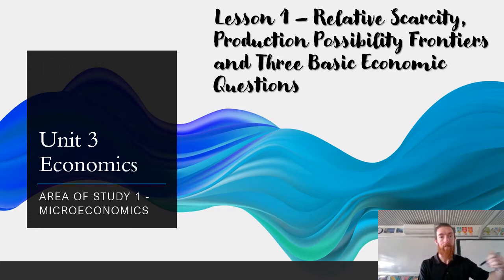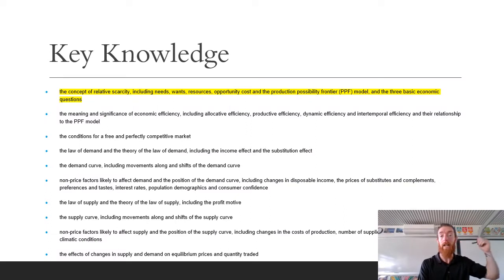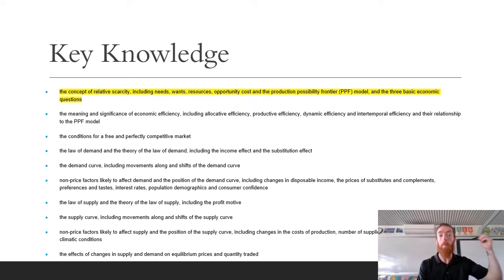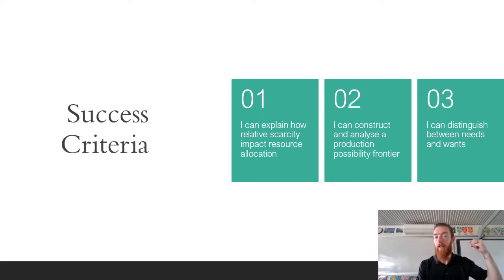We're going to get straight into our key knowledge, which today is all about the concept of Relative Scarcity, including needs and wants, resources, opportunity costs, and the Production Possibility Frontier or Model, and the three basic economic questions. Our learning intention is to understand how resources are allocated in Australia. By the end of this video you should be able to explain how Relative Scarcity can impact Resource Allocation, construct and analyse a Production Possibility Frontier, and distinguish between needs and wants.